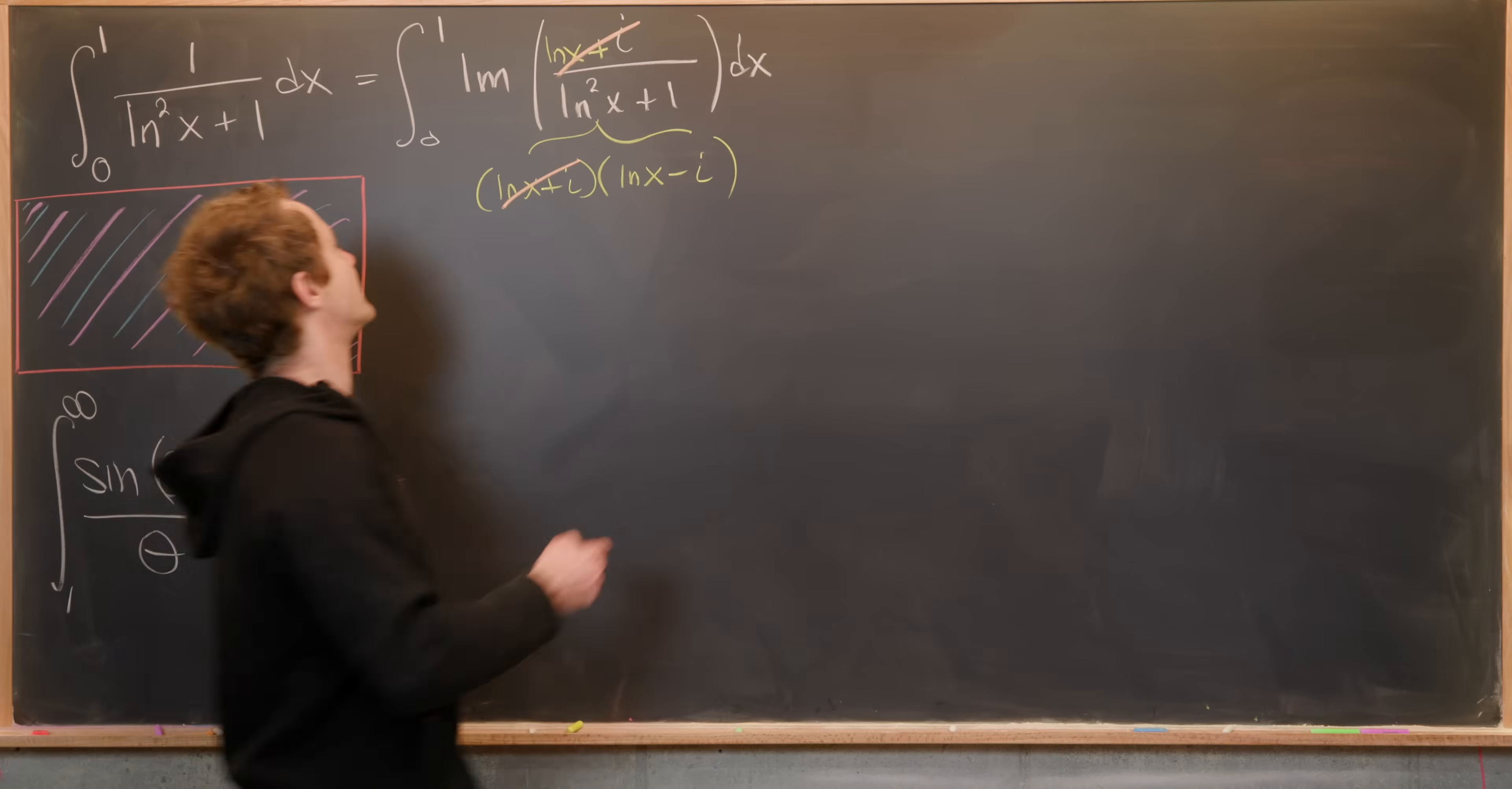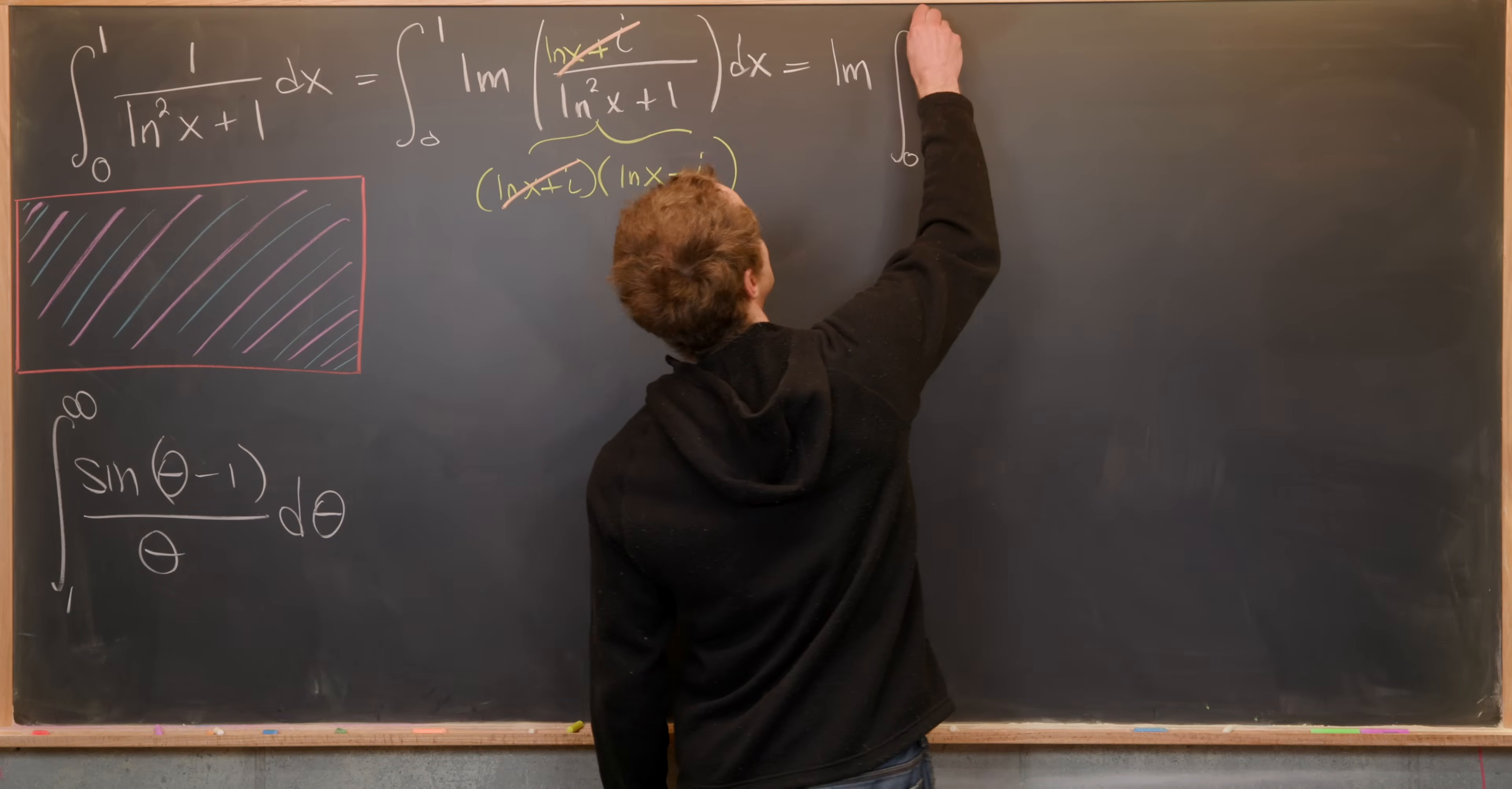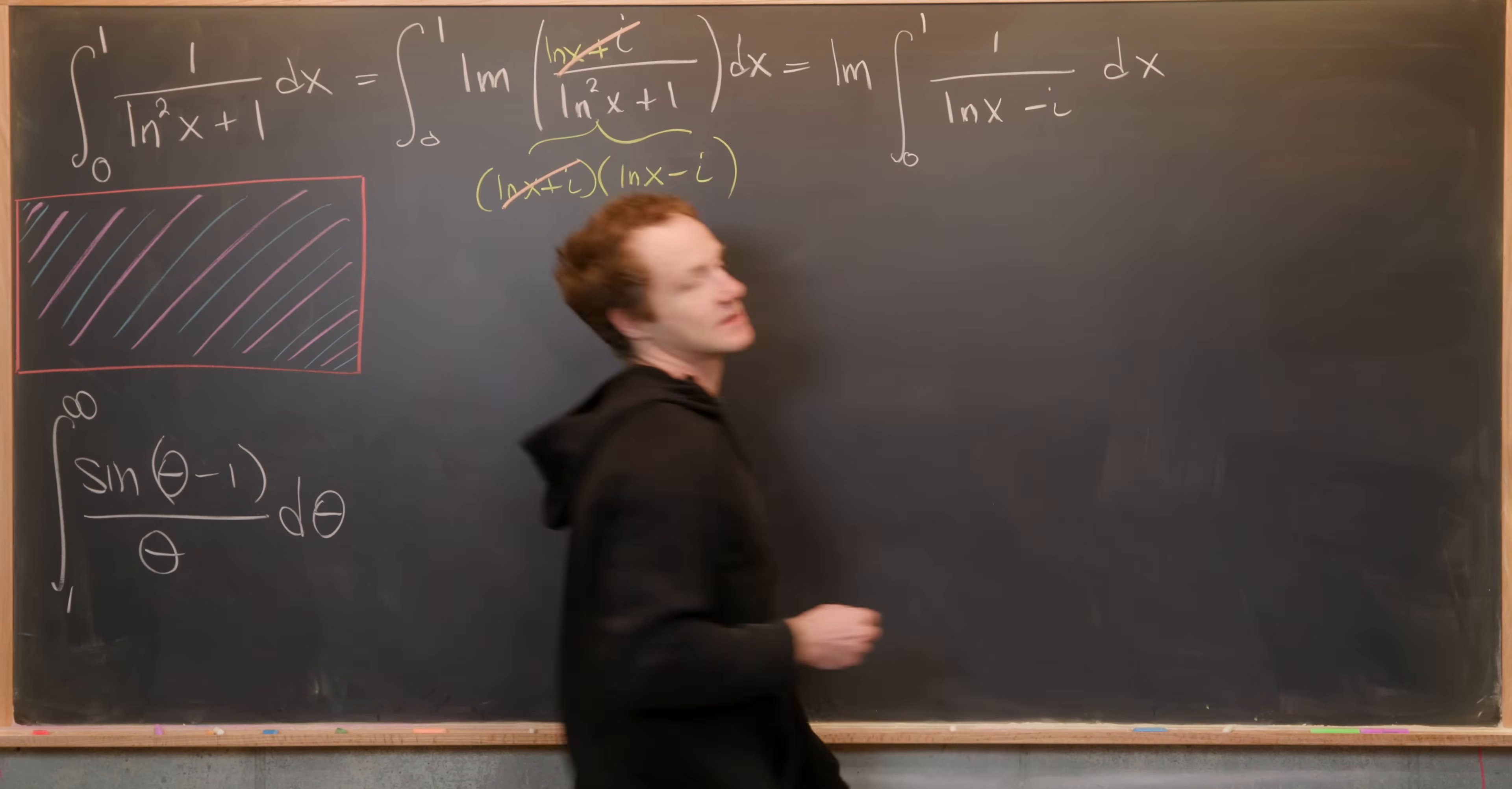So let's see what we've got. That's going to give us the imaginary part—I can factor the imaginary part out of the integral—and then I have the integral from zero to one of 1/(ln(x) - i) dx like that.